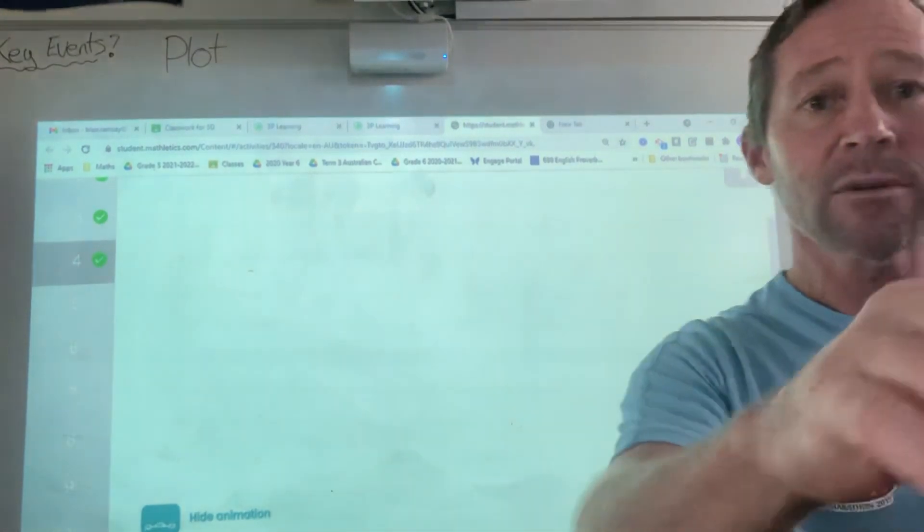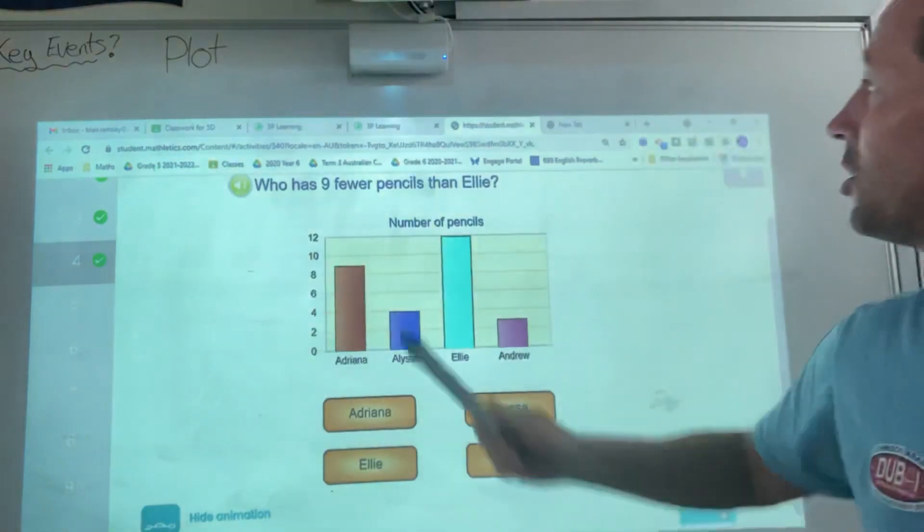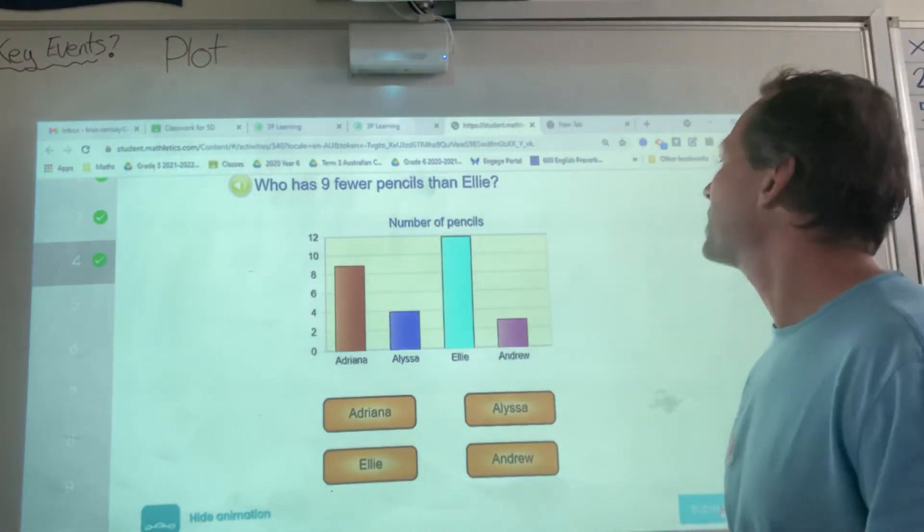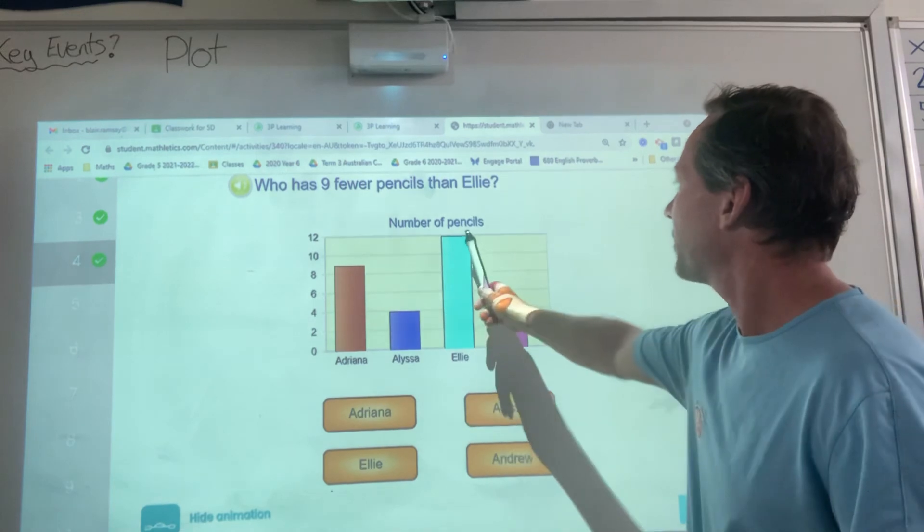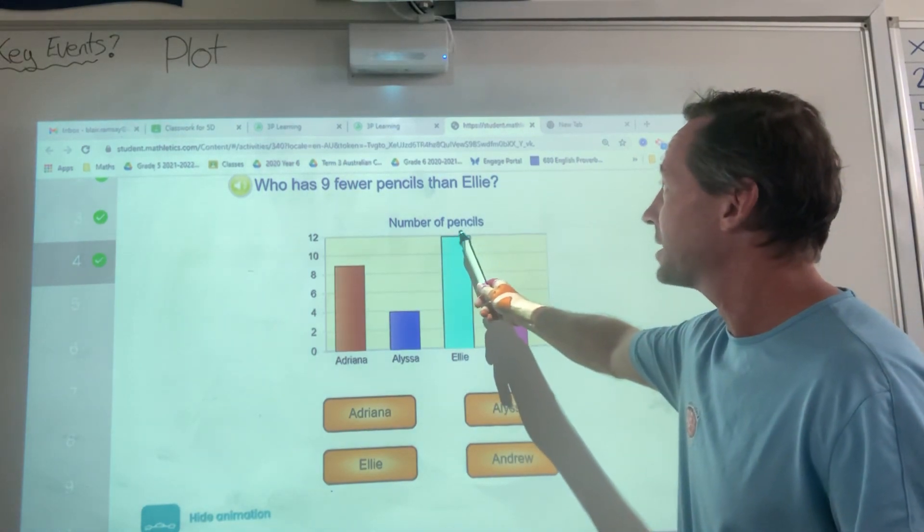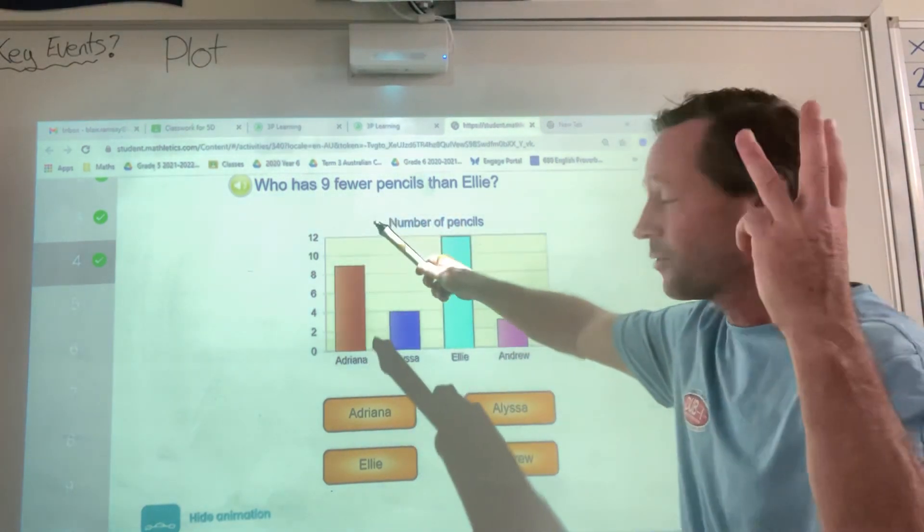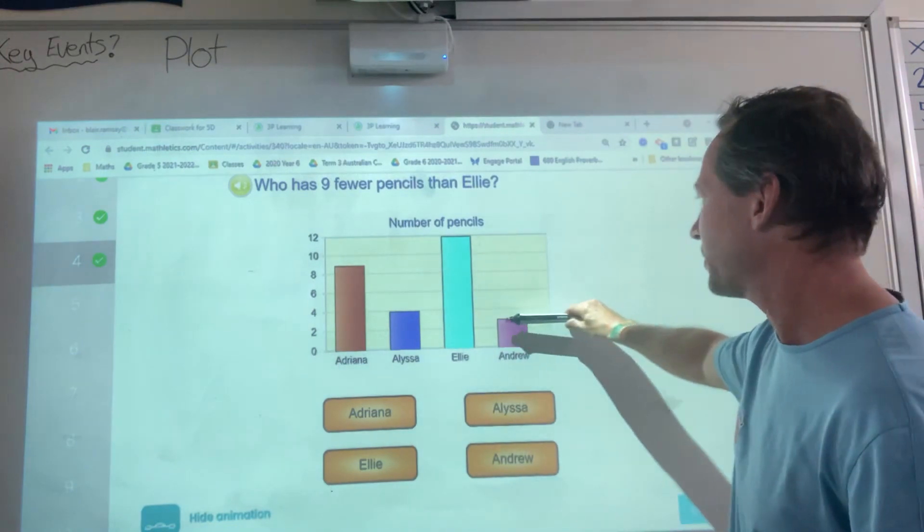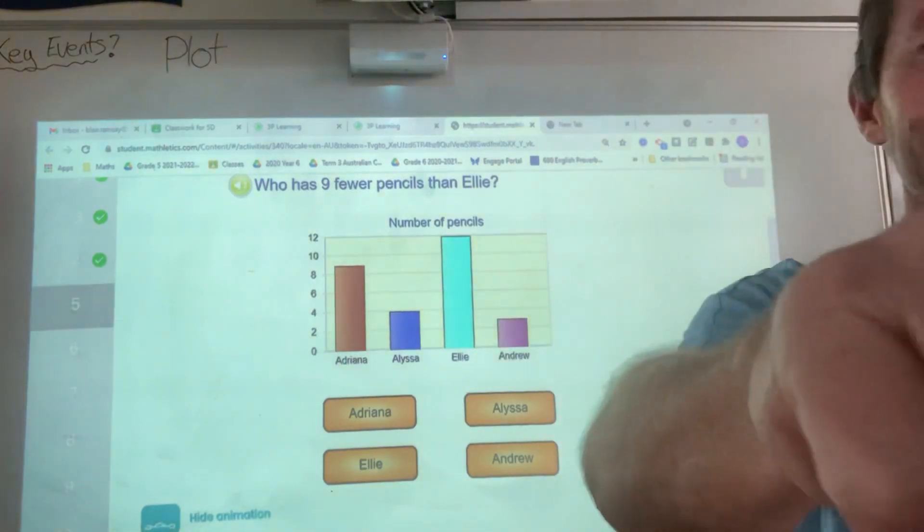All right. So, give that a go. I'm sure you'll master it. Who has 9 fewer pencils than Ellie? So, Ellie's up here. 12 minus 9 would be 3. Okay, 3. Must be Andrew. Easy.